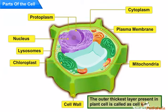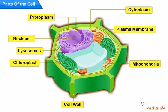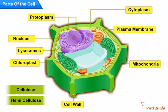The outer thickest layer present in plant cell is called a cell wall. Plant cell wall is made of cellulose and hemicellulose. Cell wall gives a rigid structure and shape to the cell, and it also gives protection to the cell.